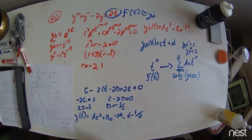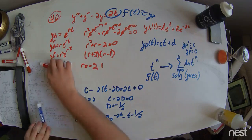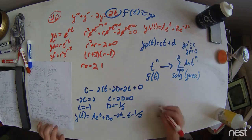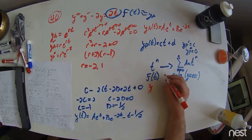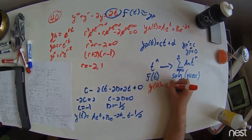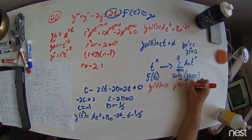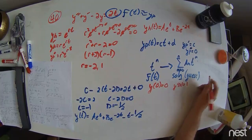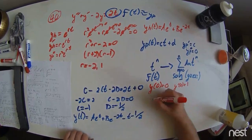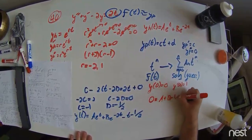However, in this problem, we also have initial conditions, and that would allow us to solve for a and b. Now, our initial conditions are y of 0 equals 0, and y prime of 0 equals 1. Plugged this into our expression for y of t and setting everything equal to each other, we have 0 equals a plus b minus 1 half.